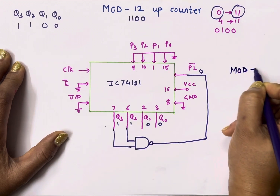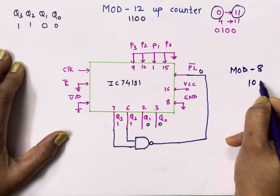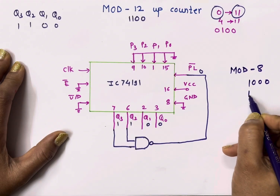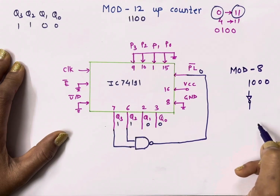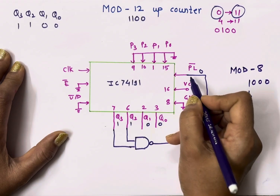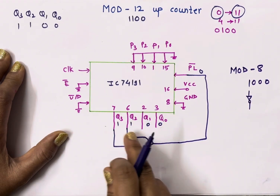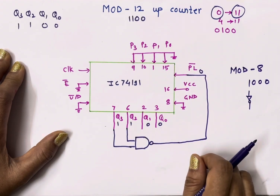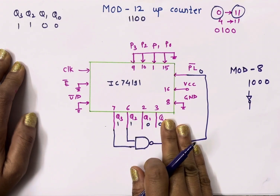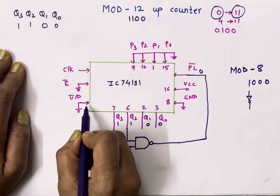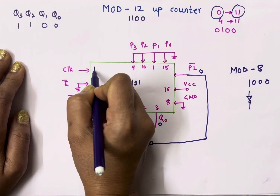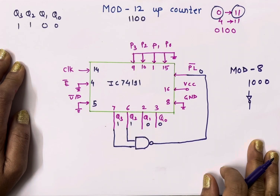To implement Mod 8 counter, the binary equivalent of 8 is 1000. Connect Q3 to the input of an inverter and the output of the inverter goes to parallel load. Remember: the output bits that are 1 connect to the input of a NAND gate, and the output of the NAND gate goes to parallel load. This is the up counter implementation. To implement a down counter, simply connect the Up/Down pin (pin number 5) to VCC. In this way we can implement a Mod-N counter using IC 74191.